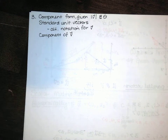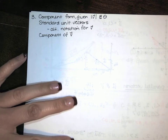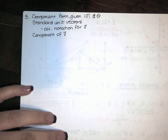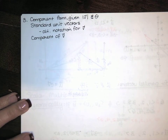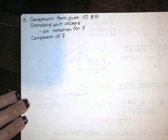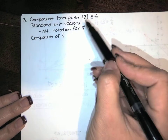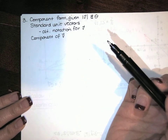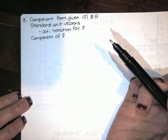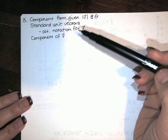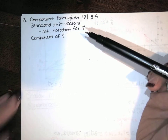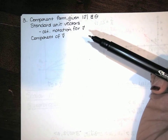Hey guys, welcome back. This is the third video about vectors. We're still looking at vectors in the plane. We're going to talk about finding the component form of a vector given the length of the vector and the angle that that vector makes with the positive x-axis. We'll talk about standard unit vectors and how they will allow us to write v with a new notation.